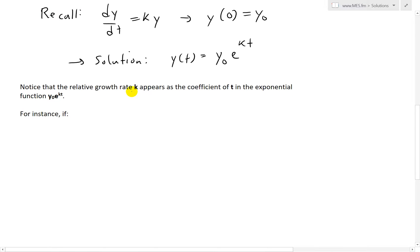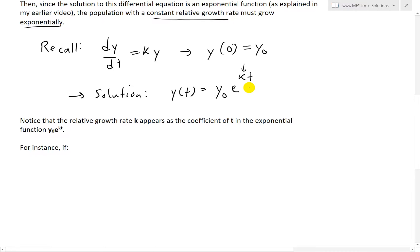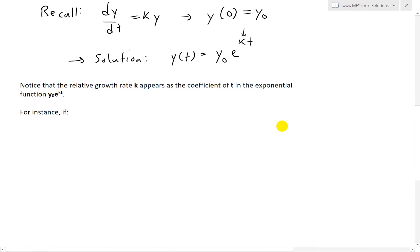And notice that the relative growth rate k appears as the coefficient of t in the exponential function y₀ e^(kt). So that's right over here, that's where it appears. It's a coefficient in front of that t variable.